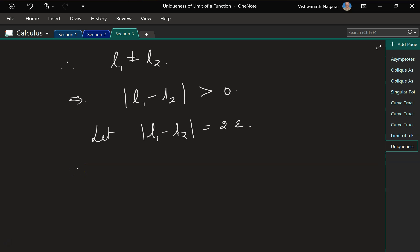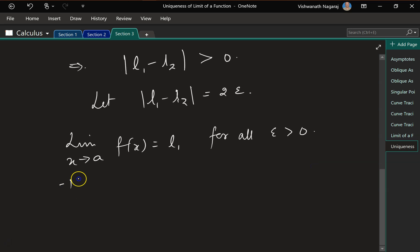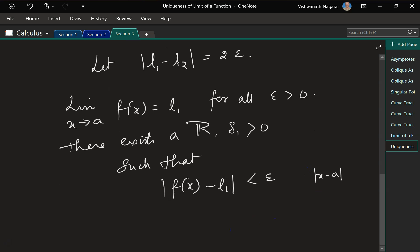Now, let's take the first limit. Limit as x approaches a of f of x is equal to l1. For all epsilon greater than 0, there exists a real number delta 1 greater than 0, such that f of x minus l1 is less than epsilon, where the distance between x and a is between 0 and delta 1.